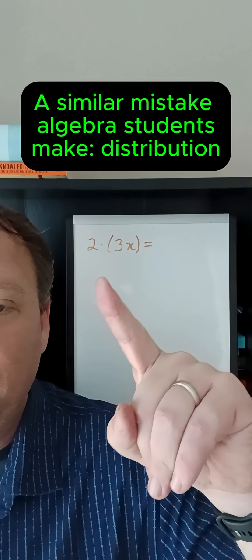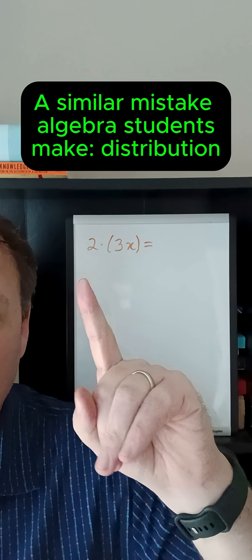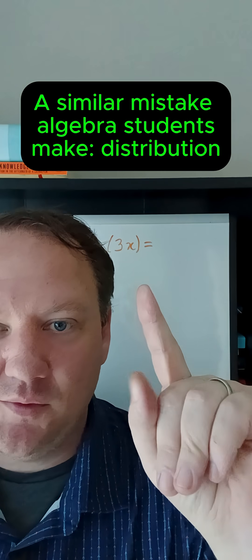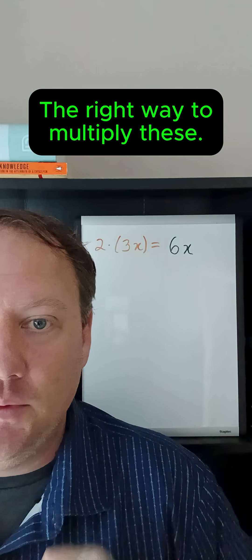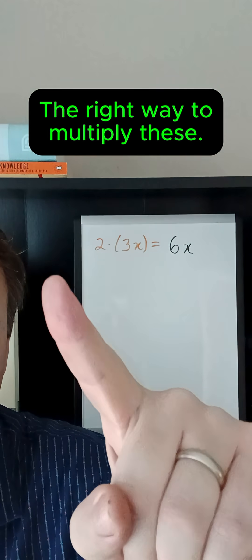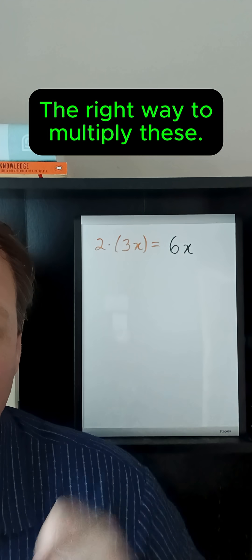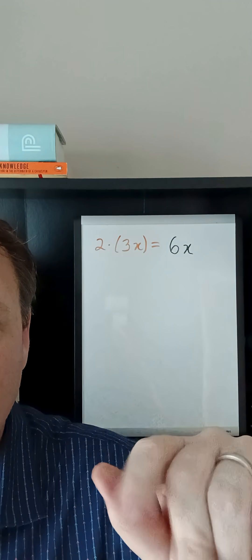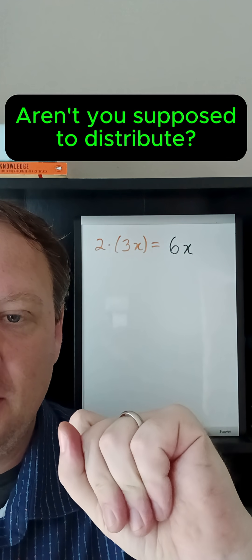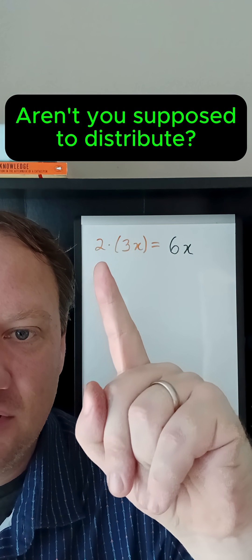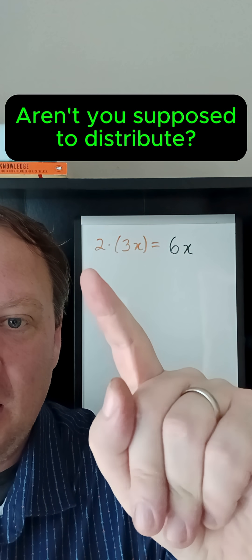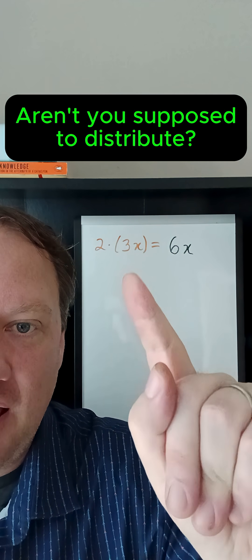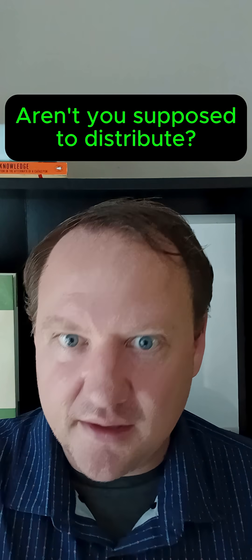Now here is a somewhat related problem. It doesn't have to do with canceling but it fundamentally comes from the same sort of mistaken understanding. This particular expression can be simplified to 6x, and that just results from putting the 2 together with the 3. But I think what some people get confused about is that they think distribution is the appropriate thing to do. And I think that's because their typical signal for when they're supposed to distribute is when they see multiplication outside of parentheses. But that is not the rule.